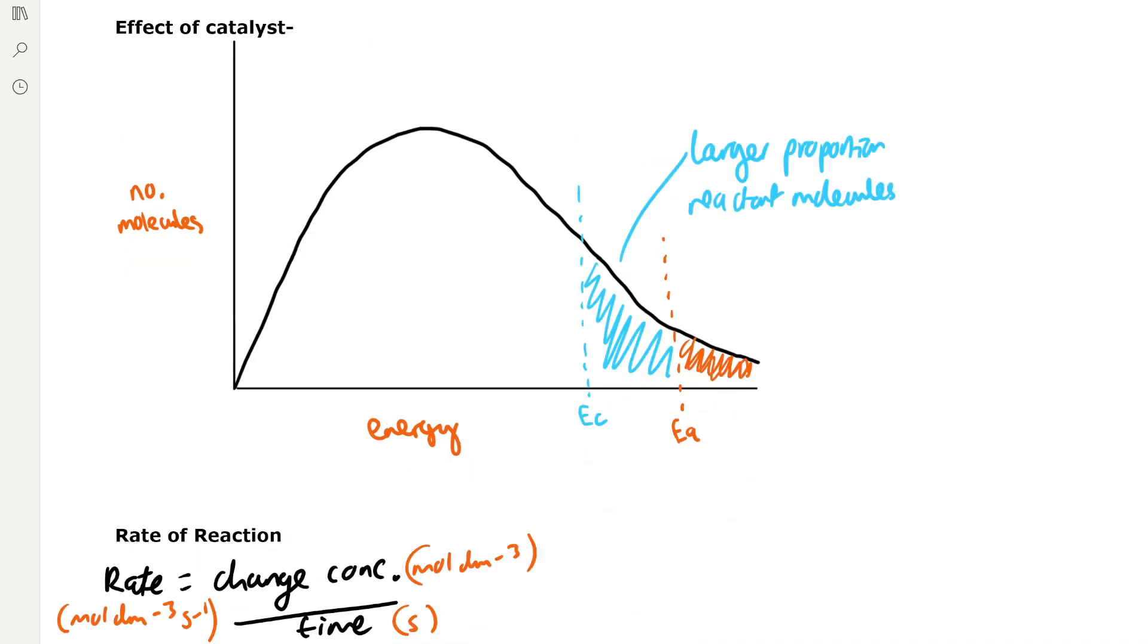Catalysts also have an effect on the Boltzmann distribution. So the activation energy shifts to the left. As you can see, Ec here represents the activation energy in the presence of a catalyst, and this means that a larger proportion of the reactant molecules have the activation energy.